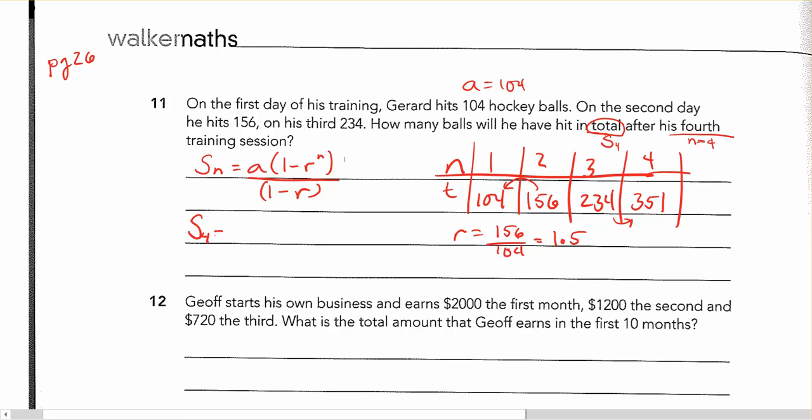So the sum for the first four terms, that's what that little four means. This is all one thing together. And your calculator, if you're using solver, you just put an x for it. a is 104 times 1 minus r is 1.5 to the power of 4. Fourth term we're looking to sum up to.